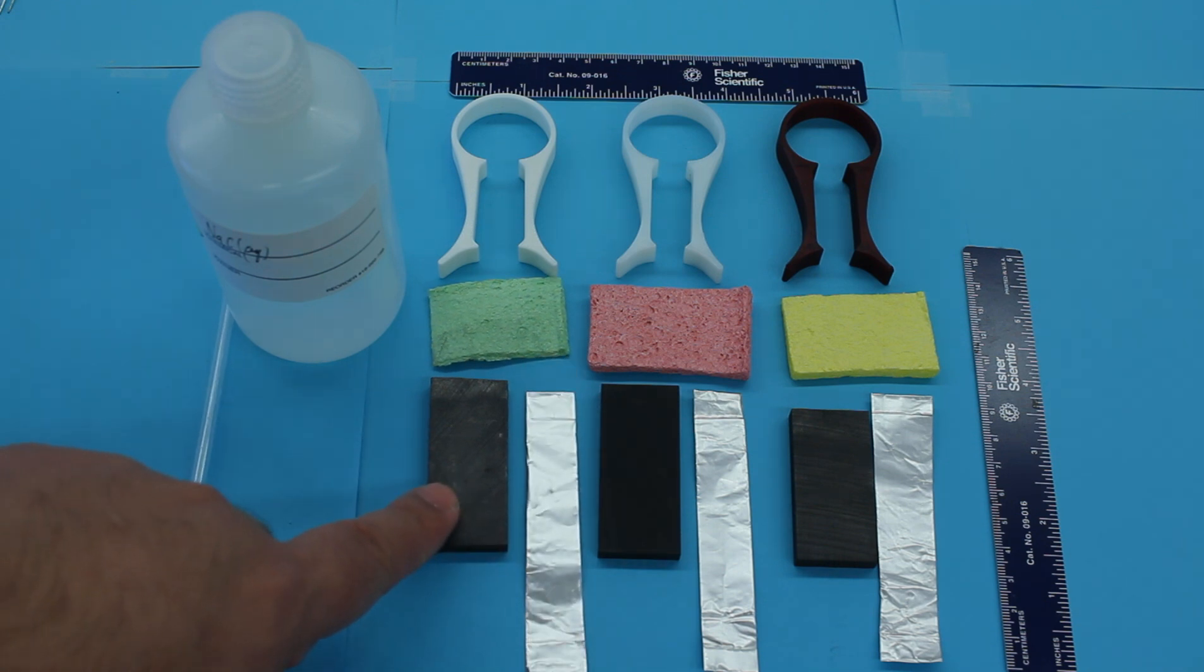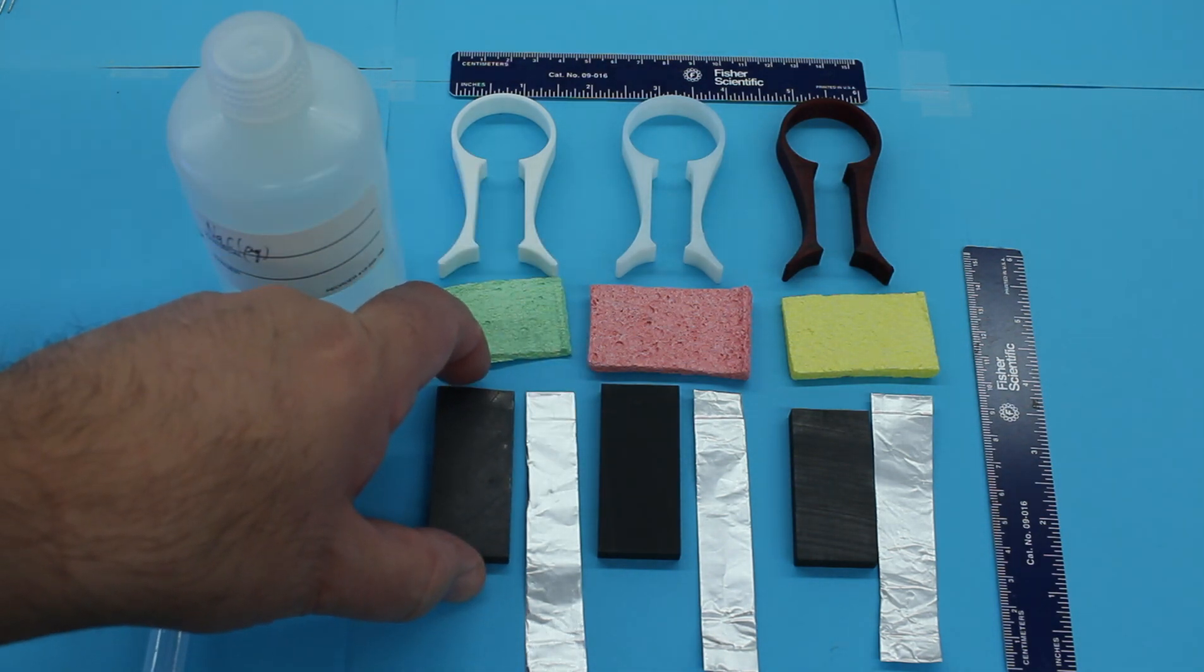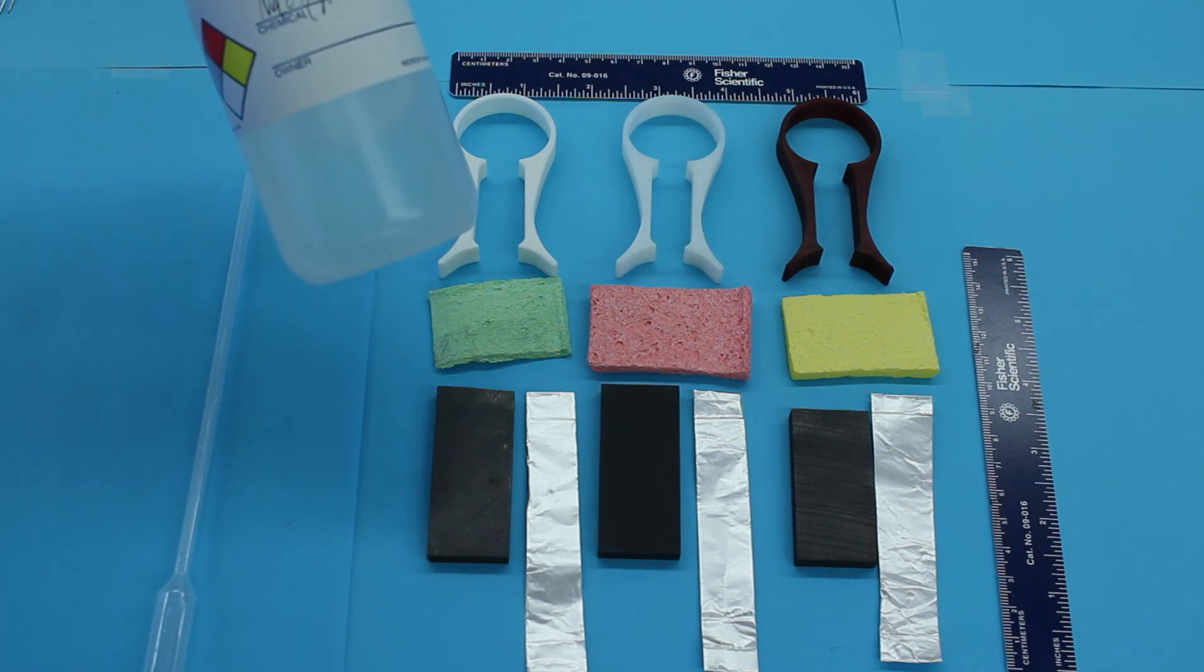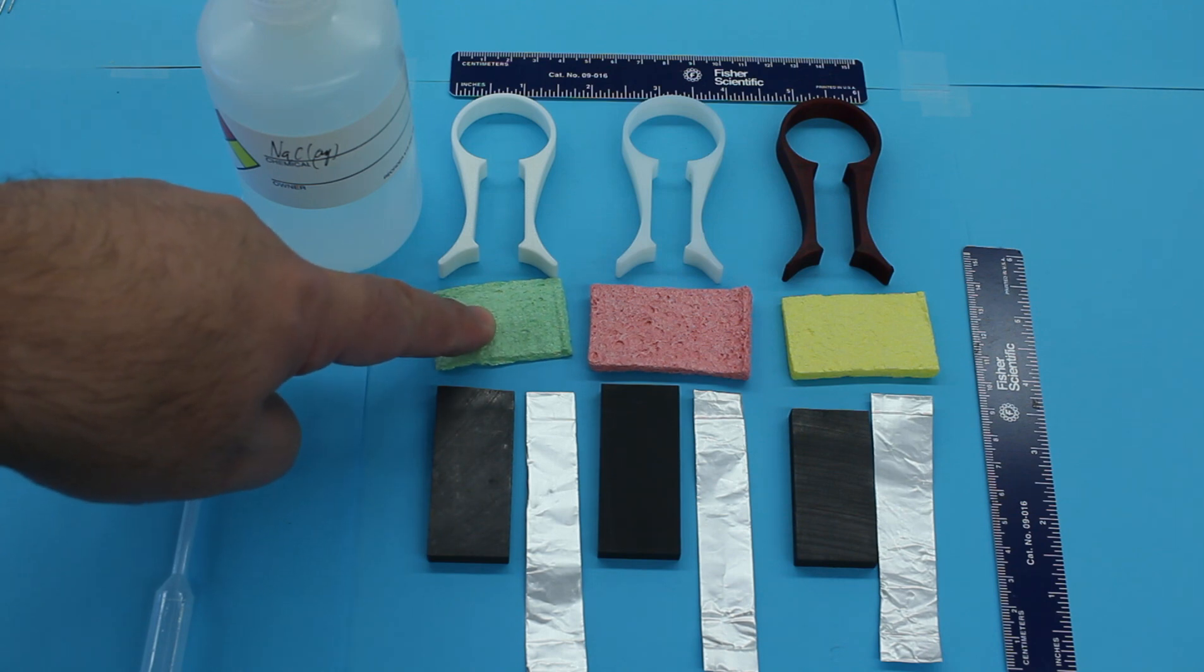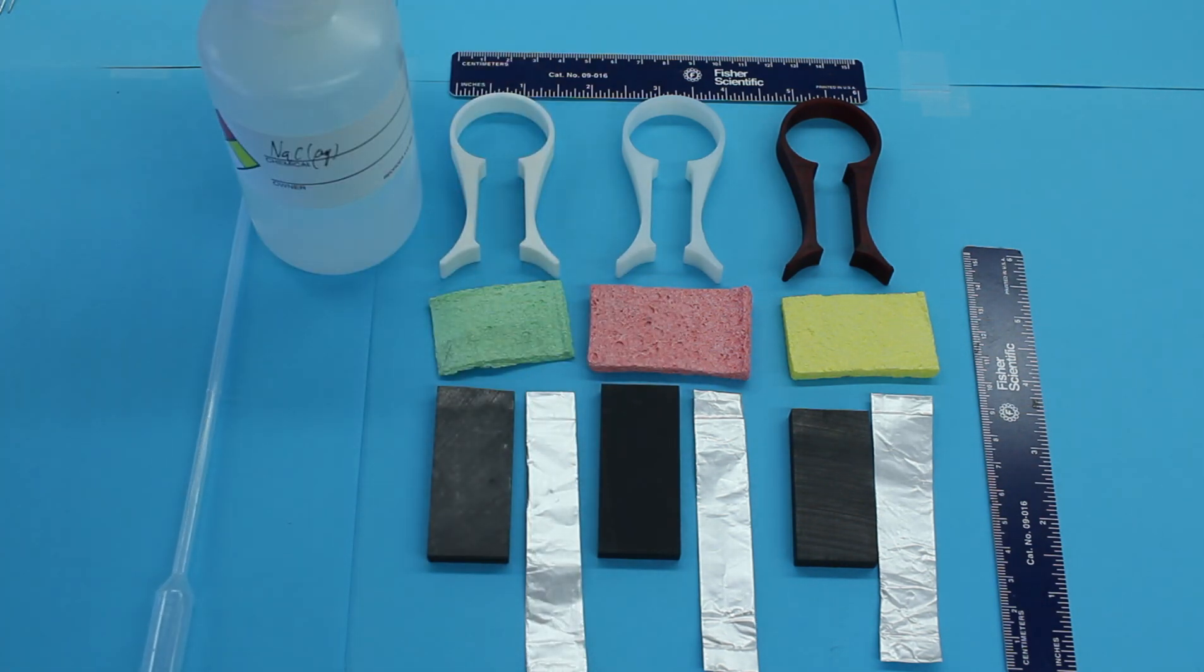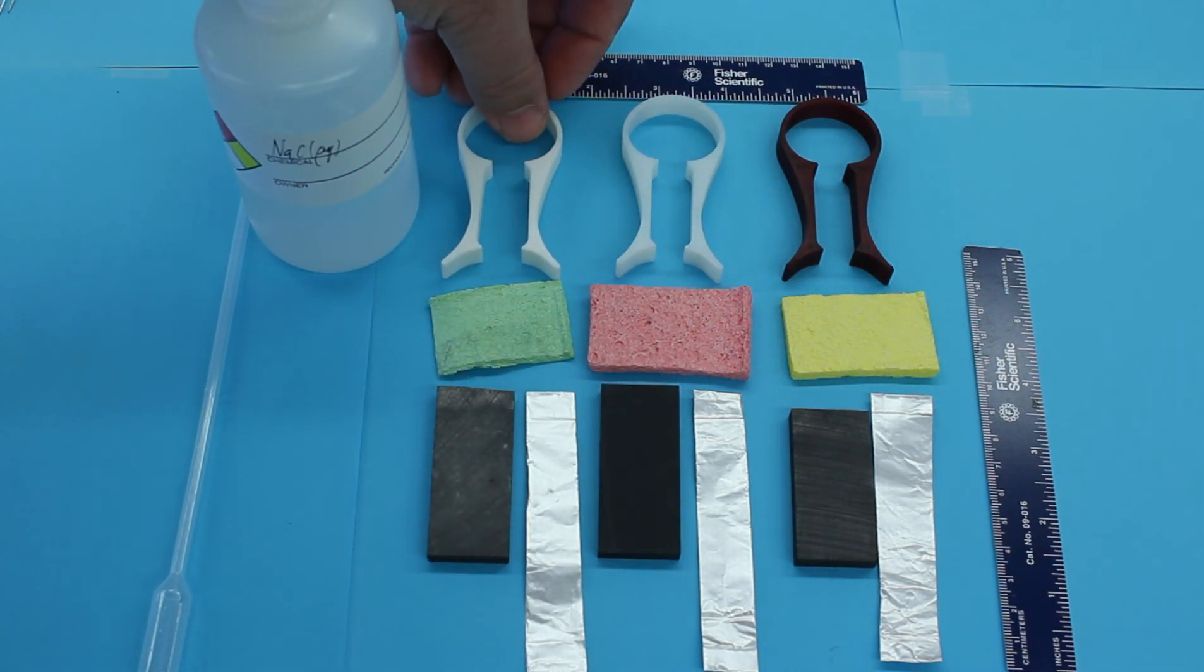We have a section of graphite that will be the cathode. We have saturated sodium chloride solution. That's going to be our electrolyte. And we're going to soak these sponges with the sodium chloride. And then we're going to assemble everything in one of these 3D printed PLA clips to hold everything together.